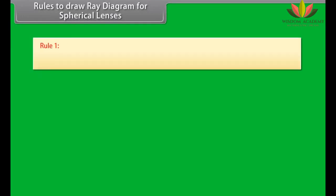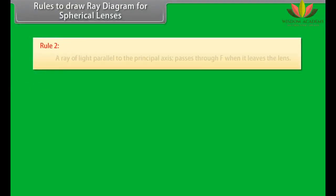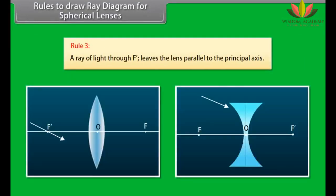Rules to draw ray diagrams for spherical lenses: Rule 1 — a ray of light through the optical center O passes undeviated through the lens. Rule 2 — a ray of light parallel to the principal axis passes through F when it leaves the lens. Rule 3 — a ray of light through F' leaves the lens parallel to the principal axis.